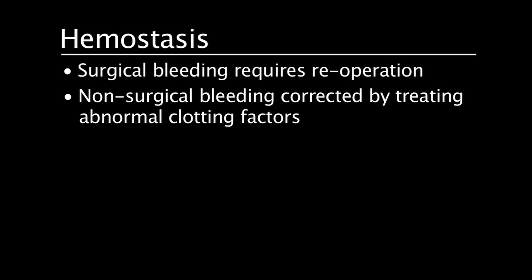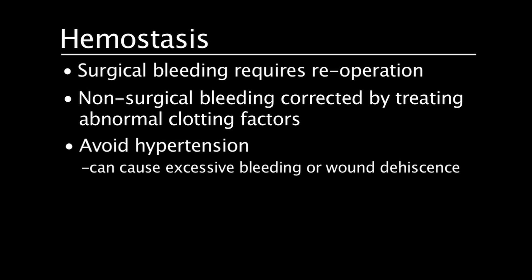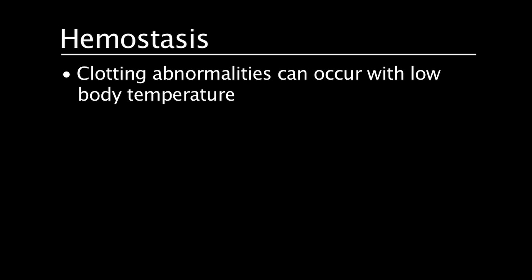It's important to distinguish surgical bleeding from non-surgical bleeding. Surgical bleeding is bleeding that requires re-operation, while non-surgical bleeding can be corrected by treating abnormal clotting factors. Abnormal values should be treated with the appropriate blood products, and the patient may need volume replacement to maintain preload and hematocrit. Hypertension should be avoided and treated, as it may cause excessive bleeding from fresh suture lines or lead to wound dehiscence. If bleeding continues despite treatment and blood loss is greater than 10 milliliters per kilogram per hour, surgical bleeding should be suspected, requiring re-operation. Hypothermia should also be avoided, as clotting abnormalities may persist when body temperature is too low — clotting occurs best closer to normothermia.